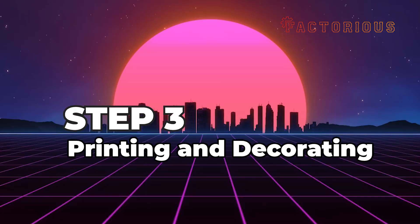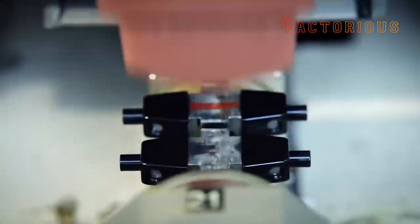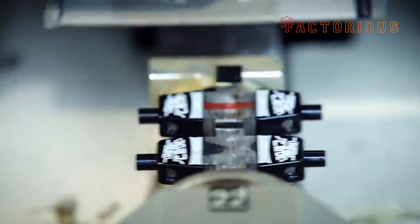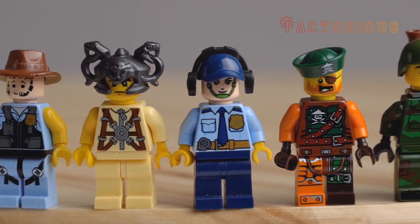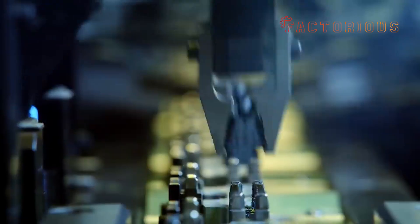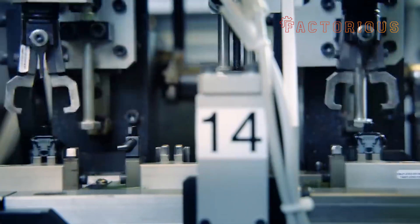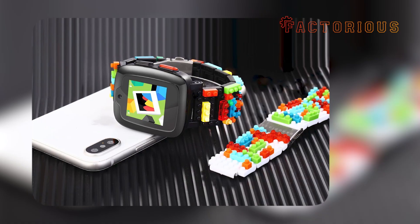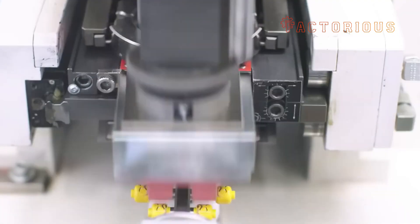Step 3. Printing and decorating. Once the plane bricks are approved, it's time to bring characters and details to life. This is where faces, logos, and designs are added using ultra-precise printing machines. Each Lego minifigure face, for instance, is printed with ink so fine that it can capture details smaller than a grain of sand.